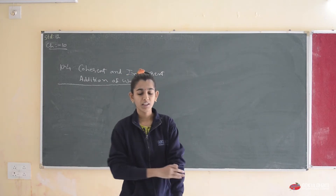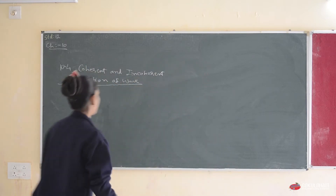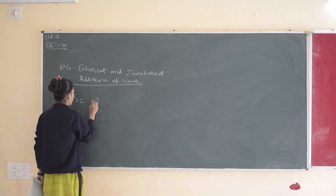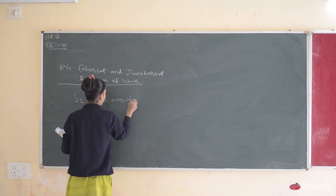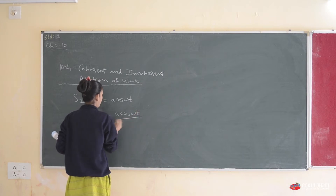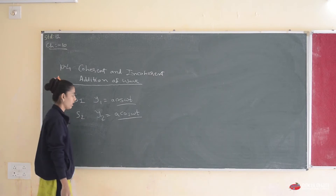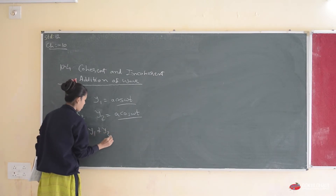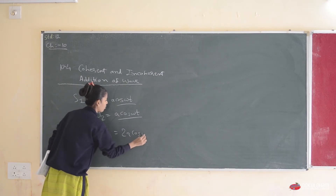Basically we will take two waves and find their displacement equations. Let us take two waves: first one is S1 and second one is S2. The displacement for wave y1 is equal to A cos(ωt), and same for y2 is equal to A cos(ωt). The addition of these two waves gives us 2A cos(ωt).